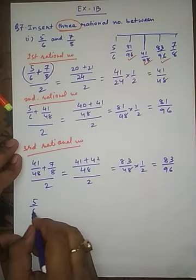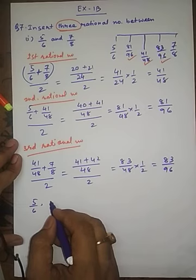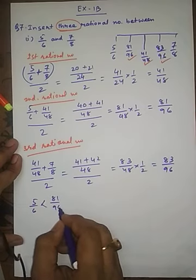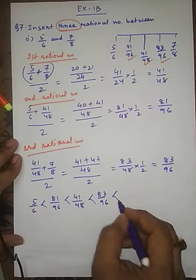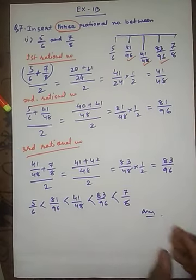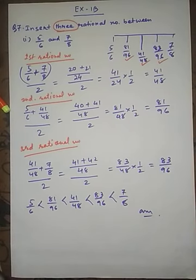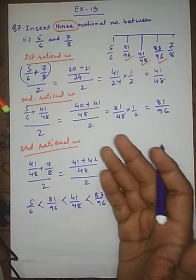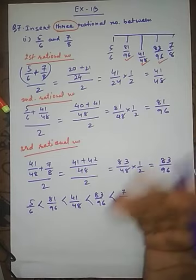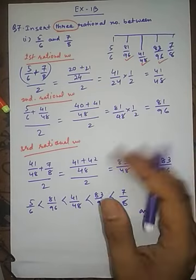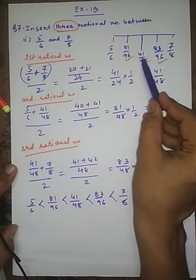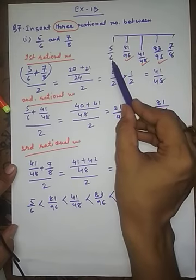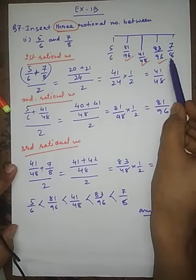So the three rational numbers between 5 by 6 and 7 by 8 are, written sequentially: 5 by 6 < 81 by 96 < 41 by 48 < 83 by 96 < 7 by 8. Now, if you match this answer with the back of your textbook, the answer may not match. Because each of the four techniques gives a different answer. The key concept is that between 5 by 6 and 7 by 8 there are infinite rational numbers, so different methods pick different valid answers.